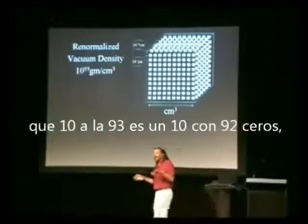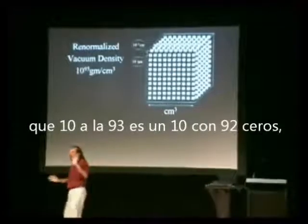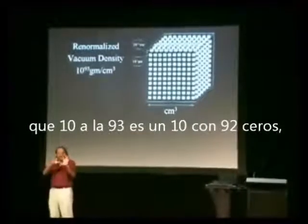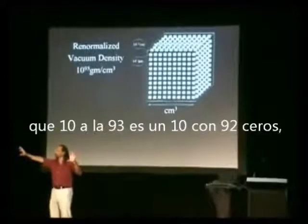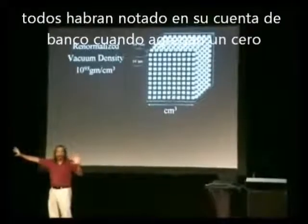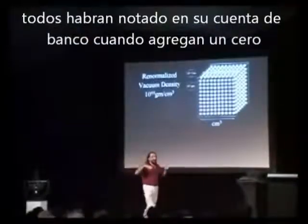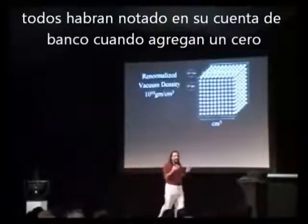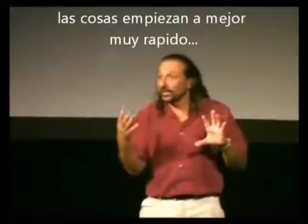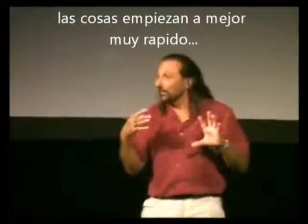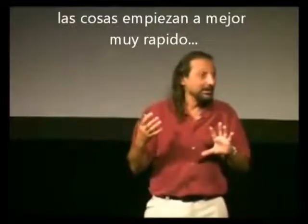You've got to understand, 10 to the 93 is like a 10 with 92 zeros following it. And you all notice in your bank account, when you add a zero, things improve very rapidly.